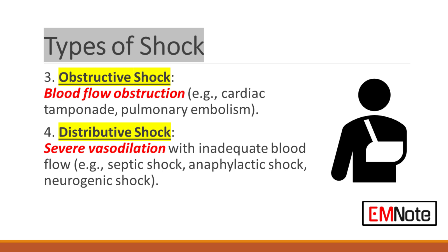Fourth, distributive shock is characterized by severe vasodilation, leading to inadequate blood flow despite normal or increased blood volume. This includes septic shock due to infection, anaphylactic shock due to allergic reactions, and neurogenic shock due to spinal cord injury.